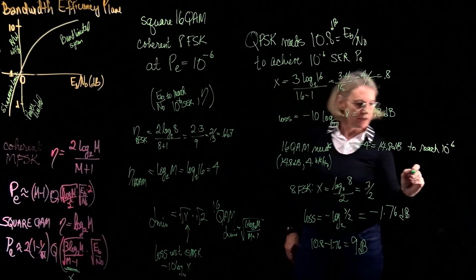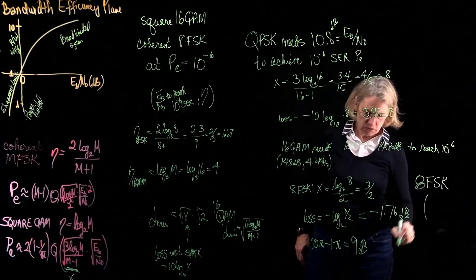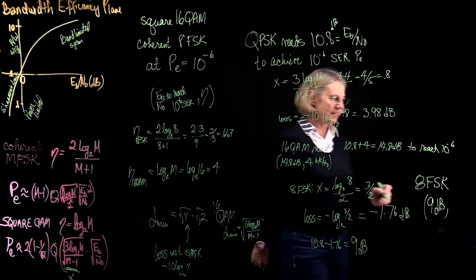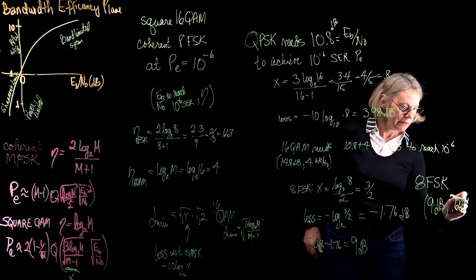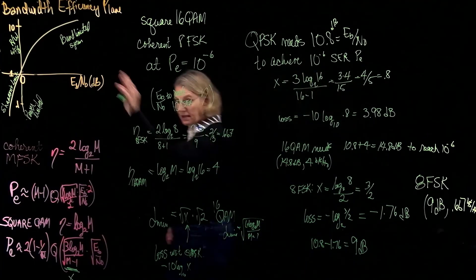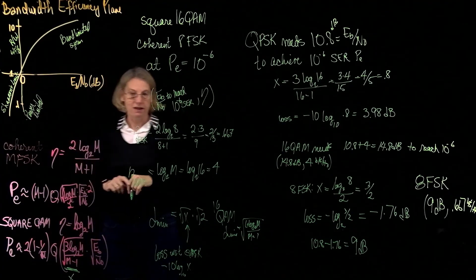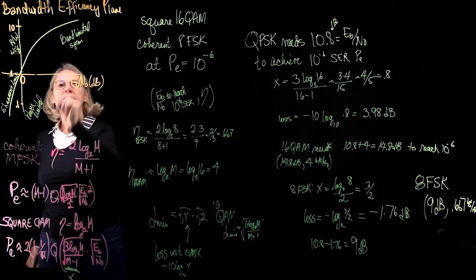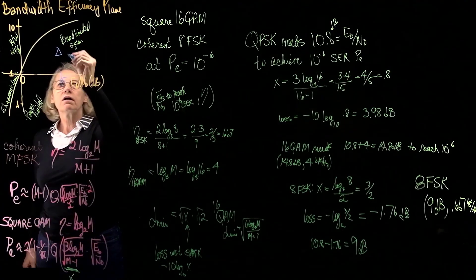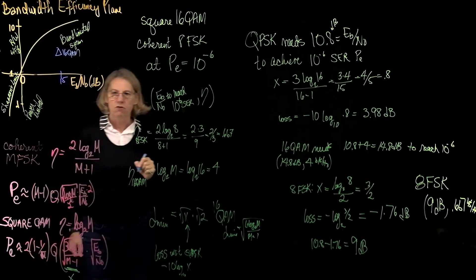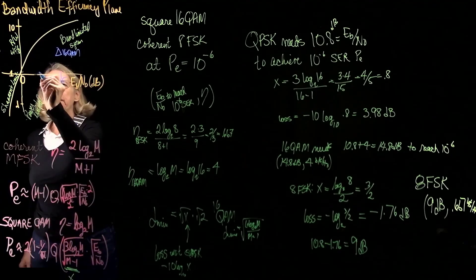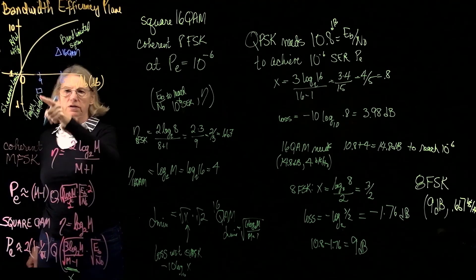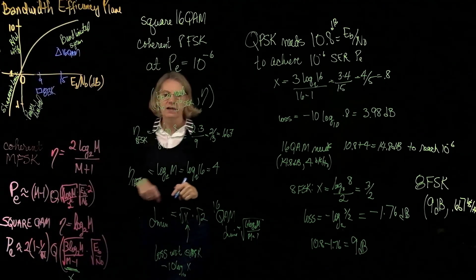So I'm only going to need 9 dB in order to achieve 10 to the minus 6 symbol error rate. So, if I look for 8 FSK, what are the coordinates? 8 FSK, my coordinates would be 9 dB, and the spectral efficiency is 0.667 bits per second per hertz. So, if I were going to plot them over here now, they would fall in these different regions of the plane. So, I would take my 16 QAM, and for 16 QAM, I would look at something like 15 dB, and I would get something like 4. And this would be my 16 QAM point. And for my 8 FSK, I would only need something like 9 dB, much less EB over N0. And, of course, my spectral efficiency would be down here. So, if I were going to plot a point for 8 FSK, they would fall in these different regions.